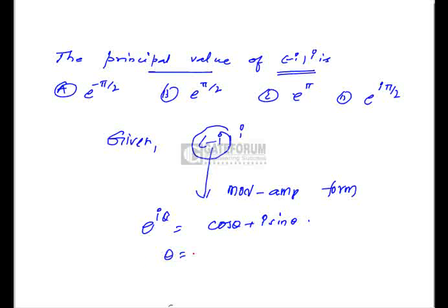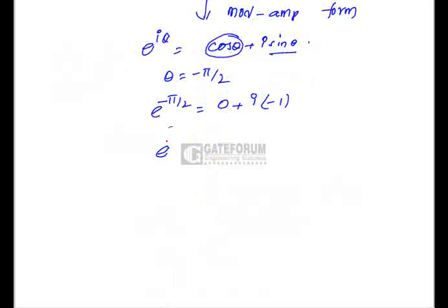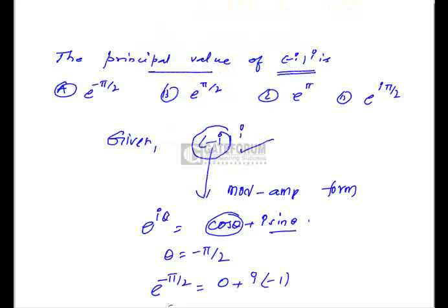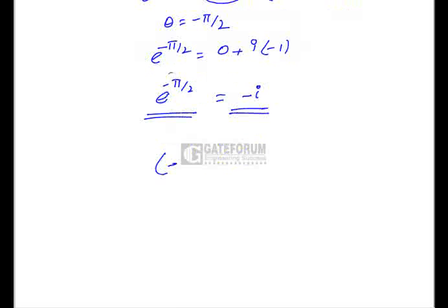Taking θ equals minus π/2, we get e^(minus iπ/2) equals cos(minus π/2) plus i·sin(minus π/2) equals 0 plus i·(minus 1) equals minus i. So minus i equals e^(minus iπ/2). Therefore, (minus i)^i equals (e^(minus iπ/2))^i equals e^(minus i²·π/2) equals e^(π/2), which is the principal value — option B.